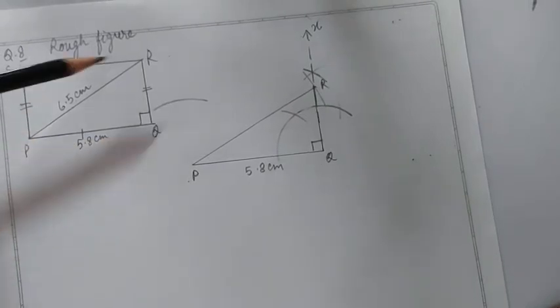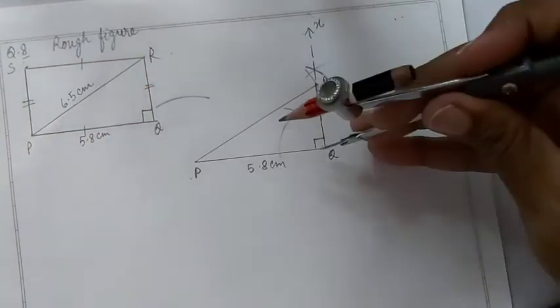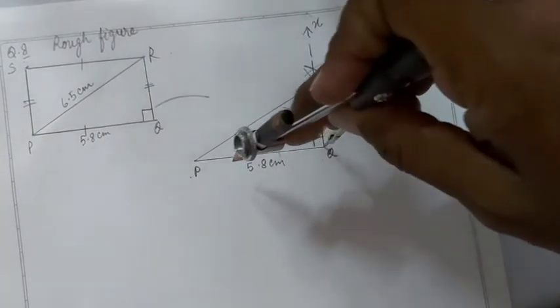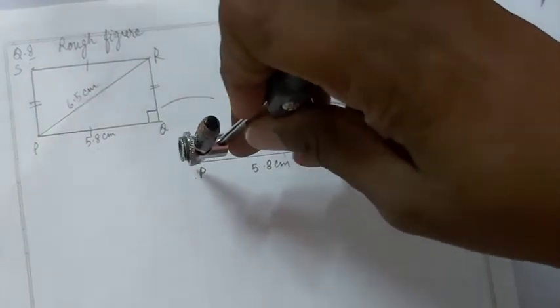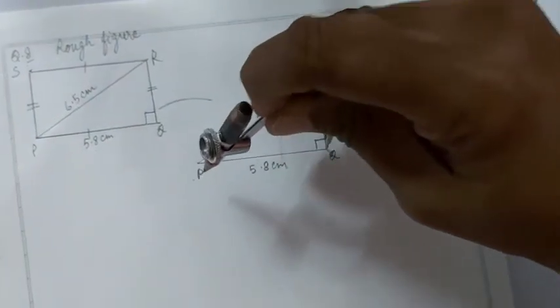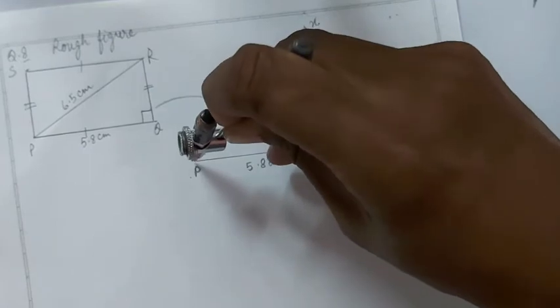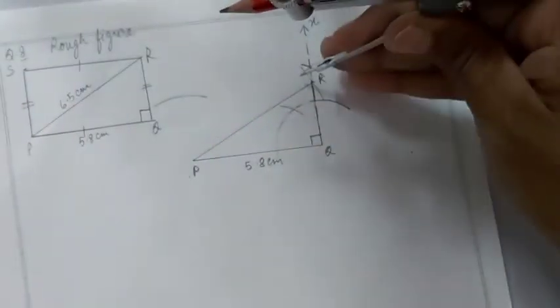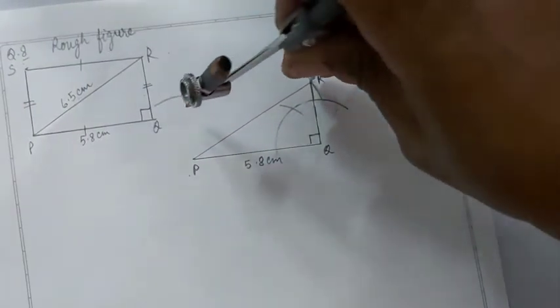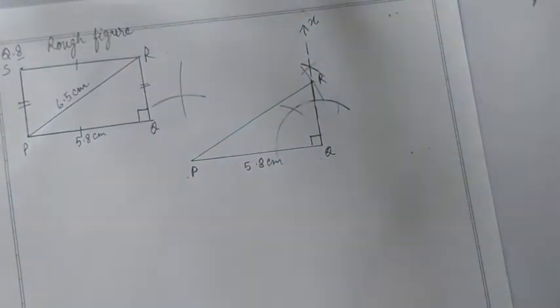Similarly we have to take RS same as PQ. So we will take radius equal to PQ, that is 5.8 cm, and with center R we will cut an arc intersecting the previous arc.